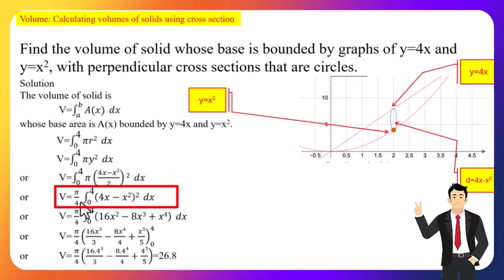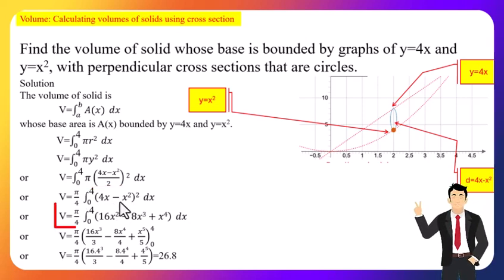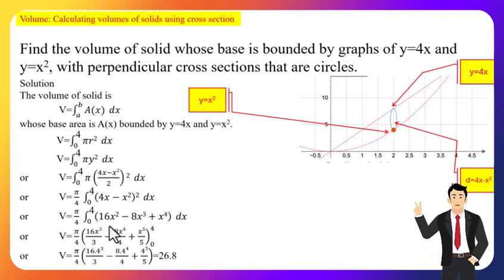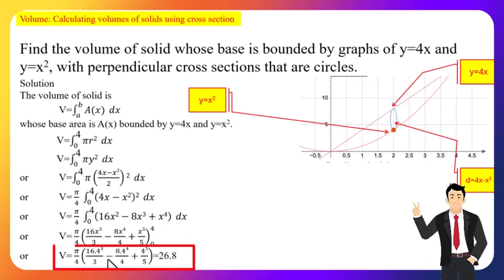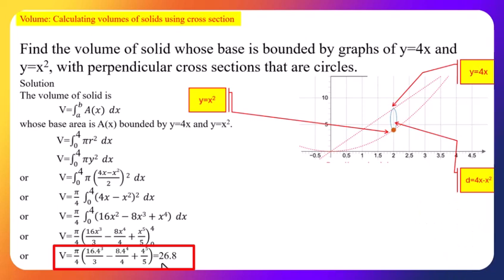The square of the denominator 2 gives 4, so we factor out π/4, yielding (π/4) ∫₀⁴ (4x − x²)² dx. Expanding gives 16x² − 8x³ + x⁴. Integrating: 16x³/3 − 8x⁴/4 + x⁵/5, evaluated from 0 to 4. After calculation, the volume of the solid formed is 26.8 cubic units.